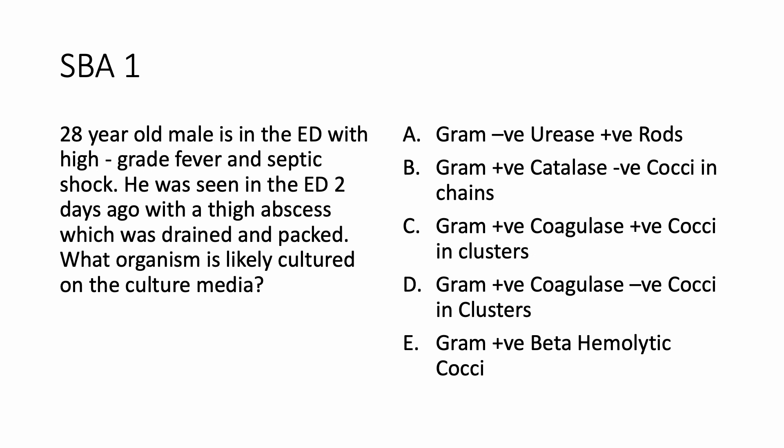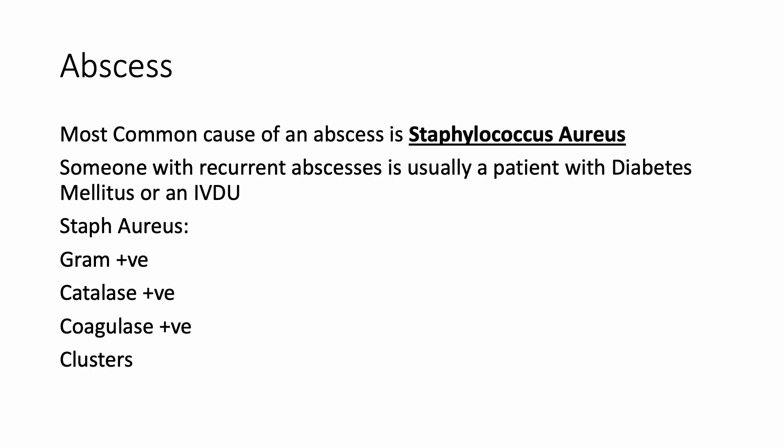In question one, if we look closely at the options we will understand they are trying to figure out which bacteria is present. The most common cause of an abscess is Staphylococcus aureus. Someone with recurrent abscesses is usually a patient with diabetes mellitus or an IV drug user. Staphylococcus aureus is quite positive — gram-positive, catalase-positive, and coagulase-positive — and they are grouped in clusters.